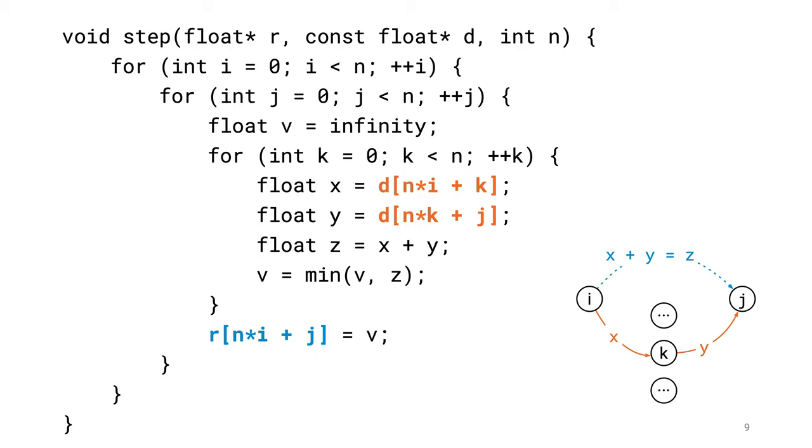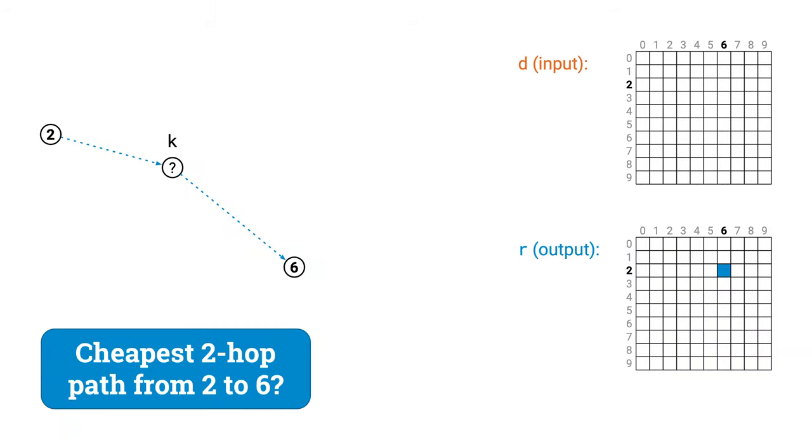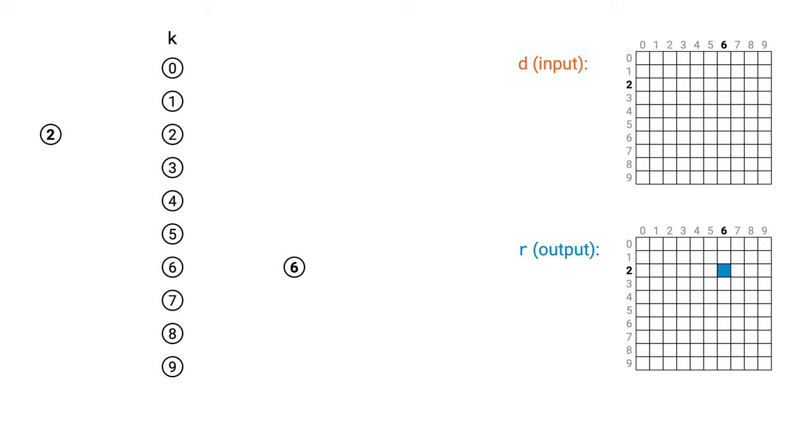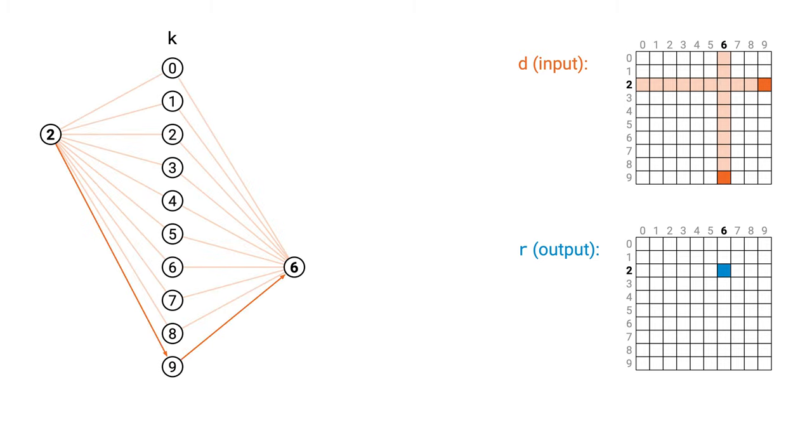Let's think about what is happening here in a bit smaller scale. For example, to find out what is the cheapest path from node 2 to node 6, we need to check all intermediate points k. So we check the cost of going from 2 to 0, and from 0 to 6. From 2 to 1, and from 1 to 6. Stay at 2, and then from 2 to 6. From 2 to 3, and from 3 to 6. And so on. We need to eventually read the entire row 2 and the entire column 6 of the input matrix. We read n plus n elements, and produce one unit of output.